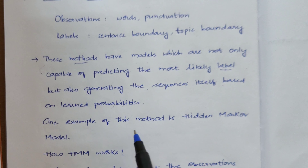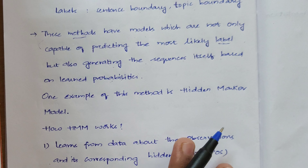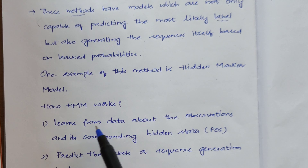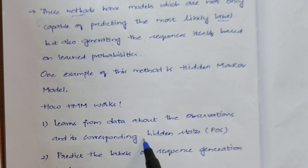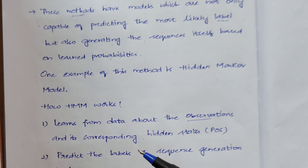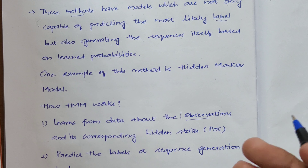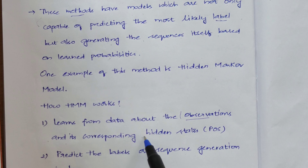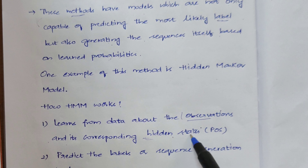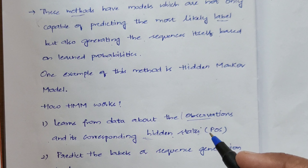One basic example of this type of model is the Hidden Markov Model. The first step is that it learns from data about the observations and their corresponding hidden states. Observations are the words or punctuation marks — we train the model with this data — and the hidden states associated with those observations are also learned by the system.